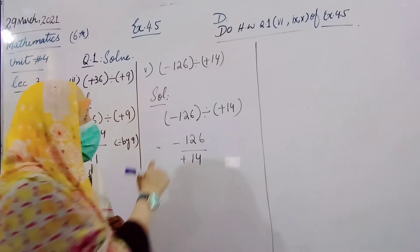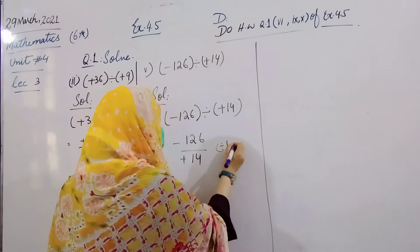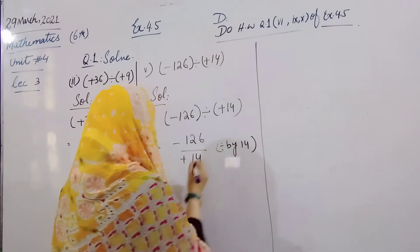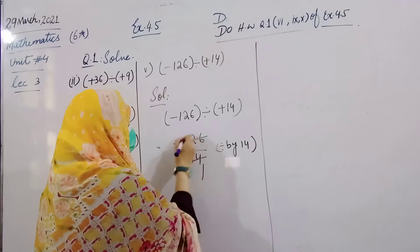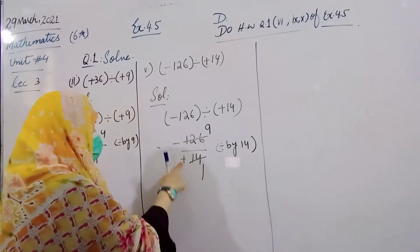To divide by 14, it's just a problem. Divided by 14, 14 ones are 14 and 14 nines are 126.